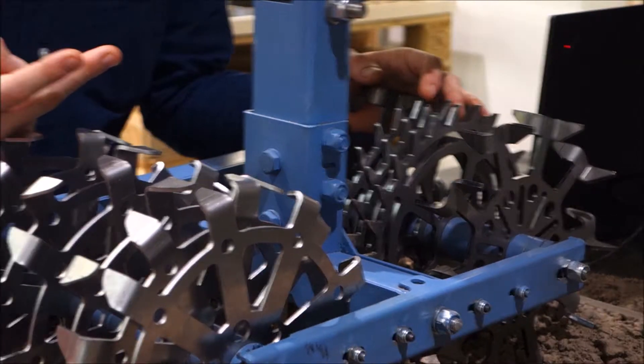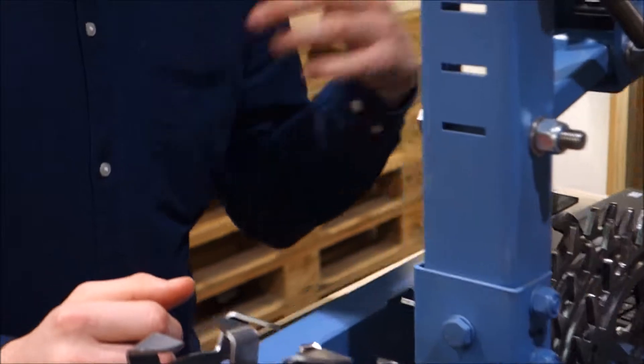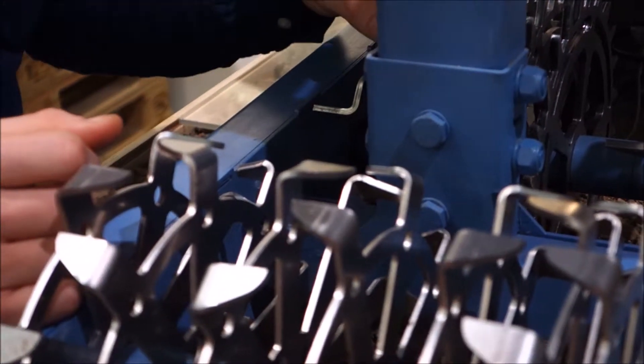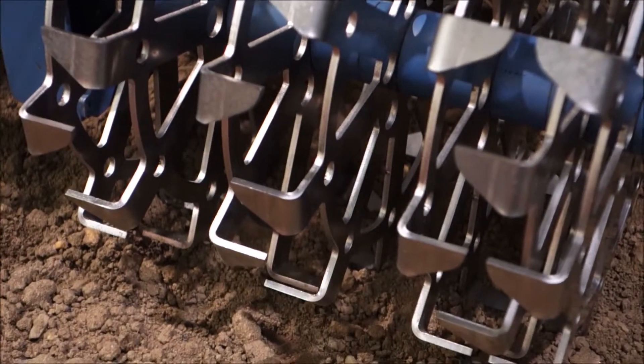Two main advantages for this machine. The first advantage is that because we are rolling there is no movement of soil to the side. So we can start weeding right after the germination of the plant.